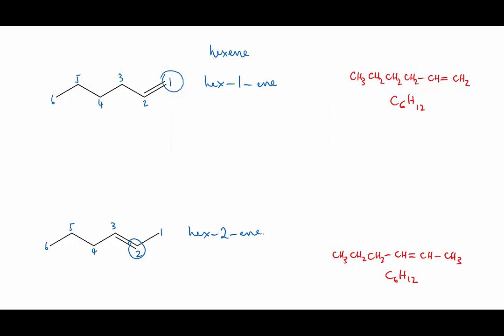For simple alkenes without branches, you can also sometimes find these names written as 1-hexene and 2-hexene. But as our molecules get more complicated and we start having prefixes on the names, it's often clearer to put the number directly in front of the ene to indicate what it refers to.